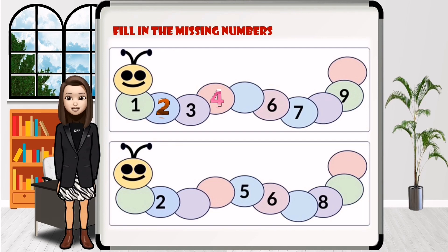What's the missing number here? Five. Great job! And then, six. Seven.